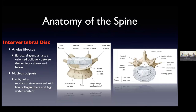We've all heard the term intervertebral disc or herniated disc. These are protective structures between the vertebral bodies of each vertebral segment. There are two portions: an outer fibrous portion and an inner softer portion called the nucleus, which has a high water content. As we go on, you'll see how disc pathology can lead to various pain syndromes.